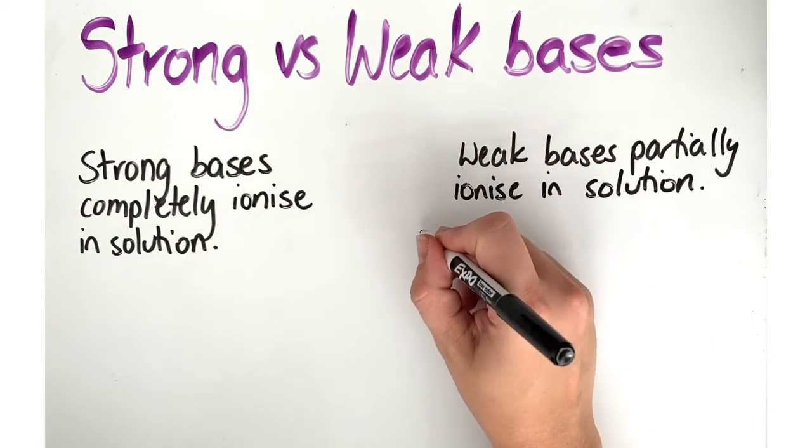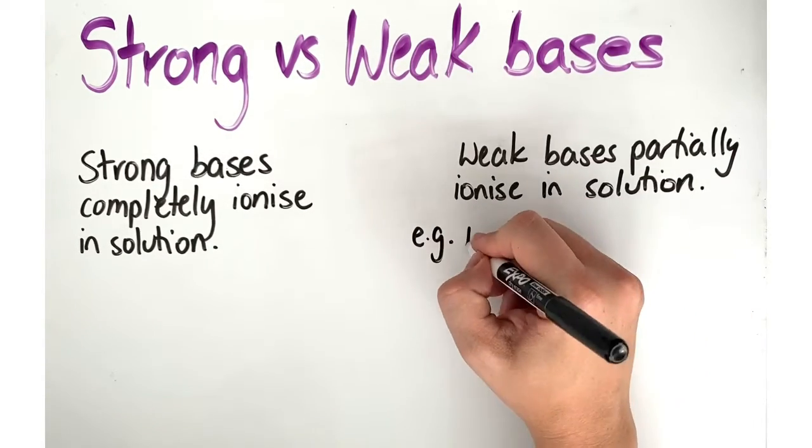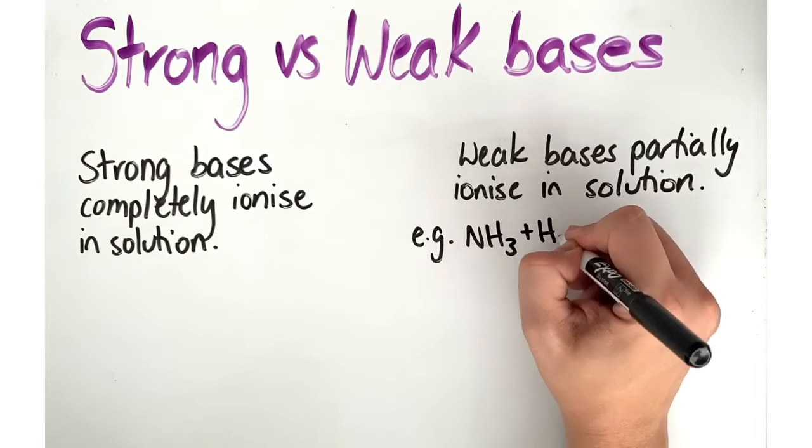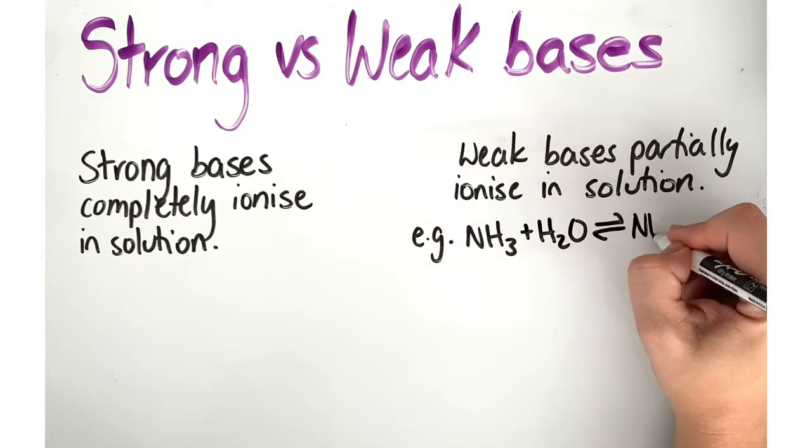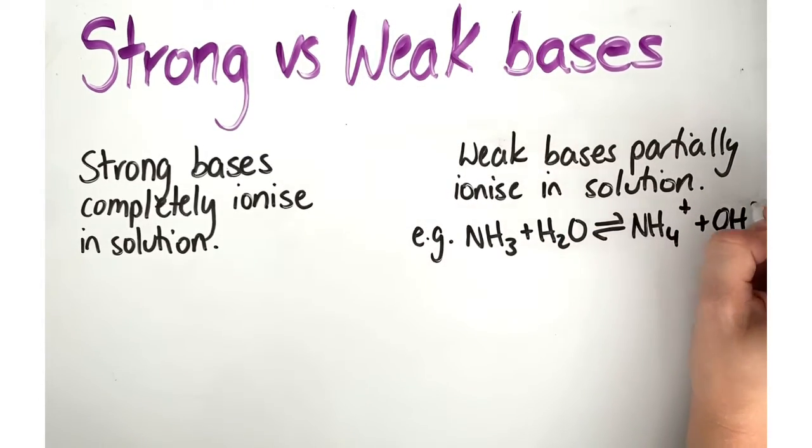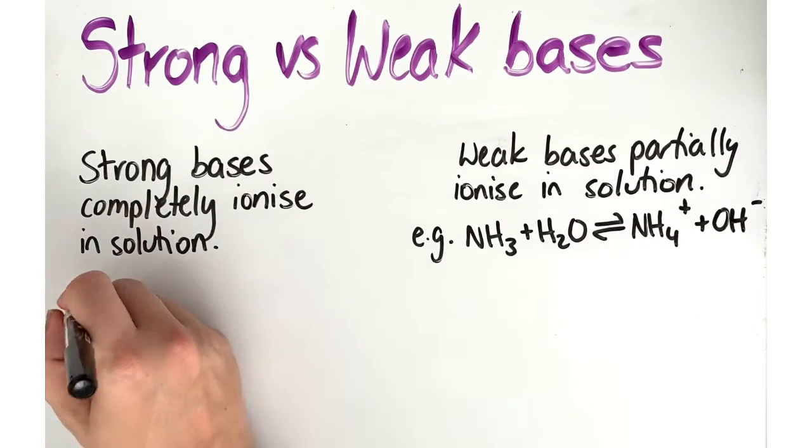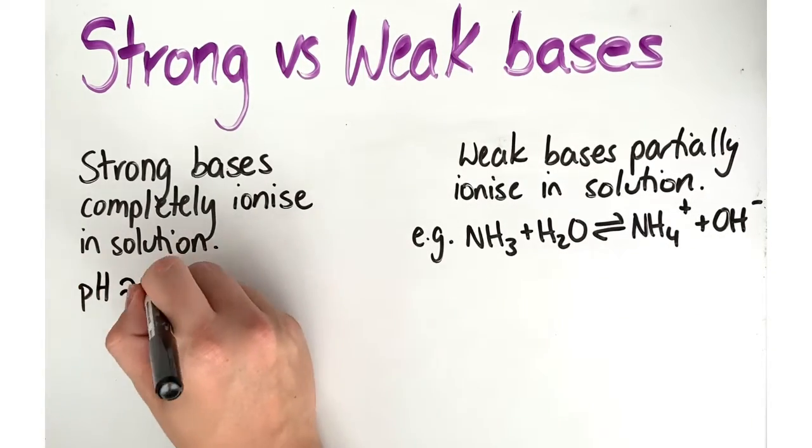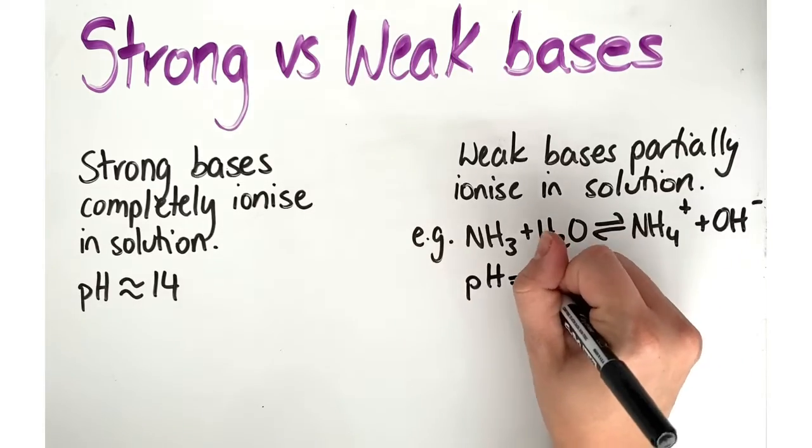Now how can we identify whether something is a strong or weak base? We can also use our pH value. A strong base will have a pH close to 14, the uppermost end of our pH scale, while a weak base will have a pH between 8 to 13.